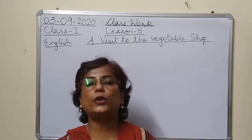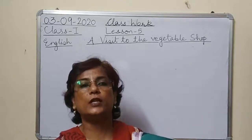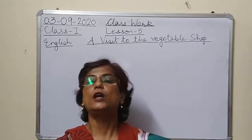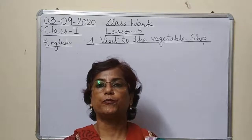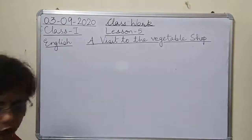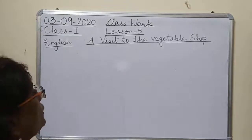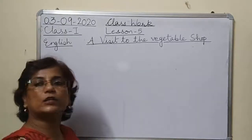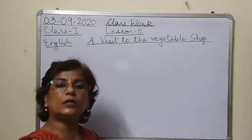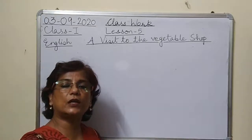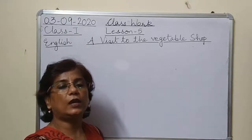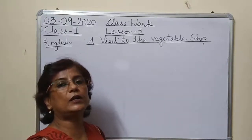So this is why it is very important that whatever we are saying, we must follow them. Now children, today we are doing lesson number 5 — 'A Visit to the Vegetable Shop.' We have done the wow words, we have done question answers, we have done word meanings. So today I will start with the grammar exercise.